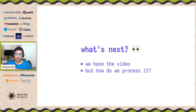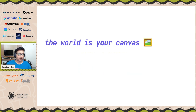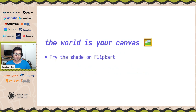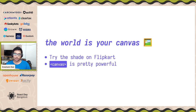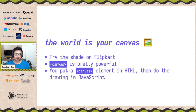Now that we have the video, how do we actually process it? In September 2019, the team at Flipkart released a blog post called 'Try the Shade on Flipkart,' where they used the canvas element to programmatically color a base image and show various lipstick shades. The canvas element is super powerful — you can actually draw on it with JavaScript. You just drop in your canvas element in your HTML and do the actual drawing inside JavaScript.